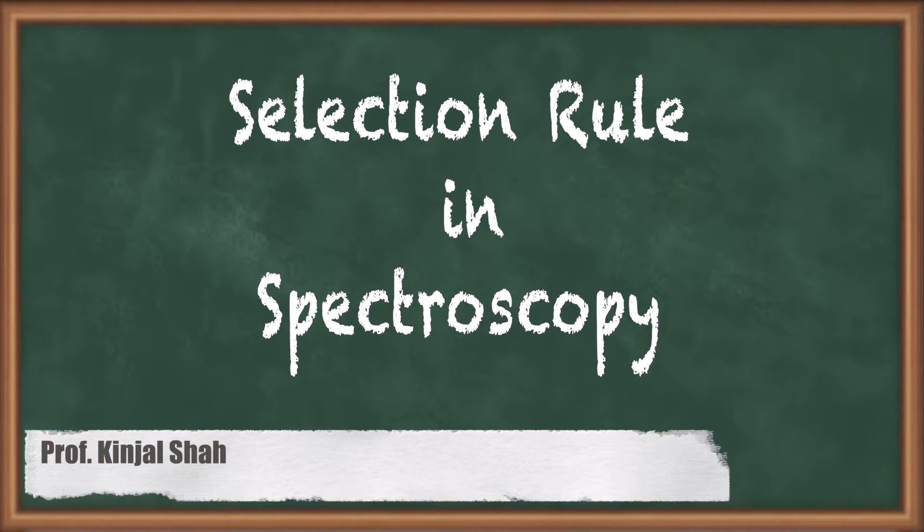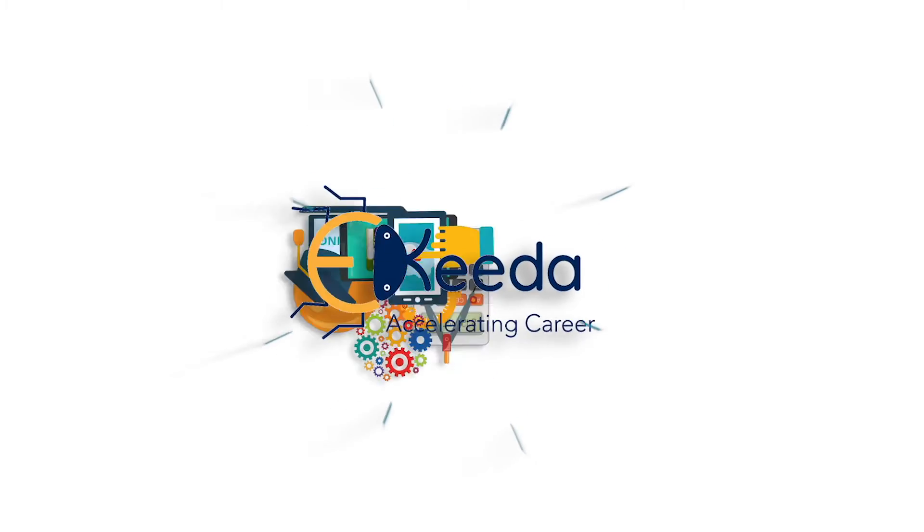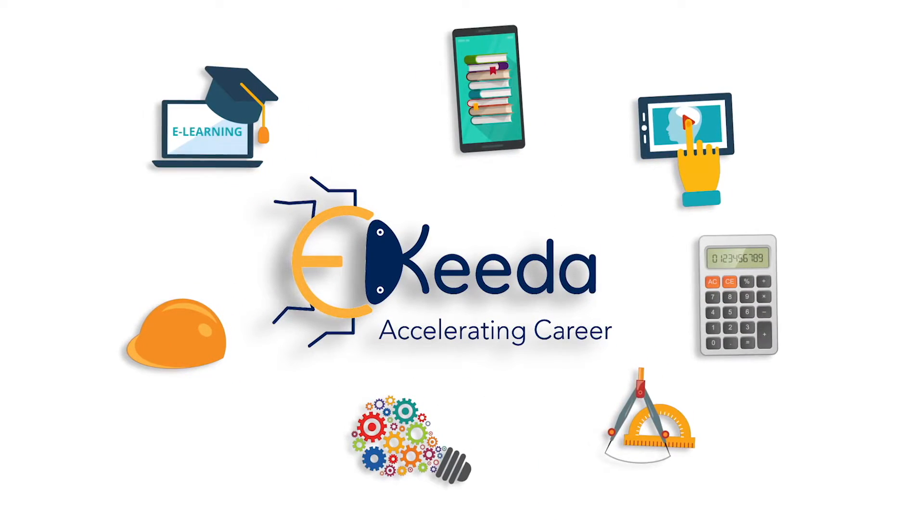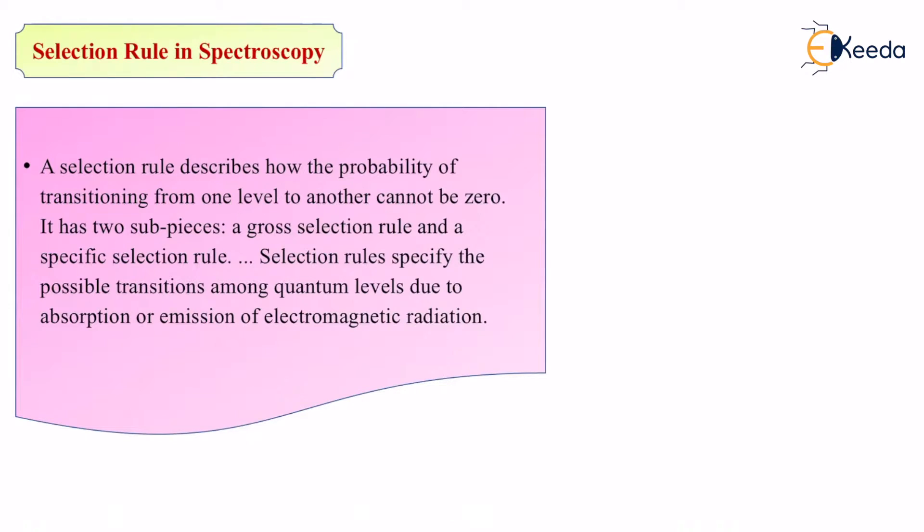Selection rule in spectroscopy. We are going to study the selection rule of spectroscopy. A selection rule describes how the probability of transitioning from one level to another level cannot be zero.